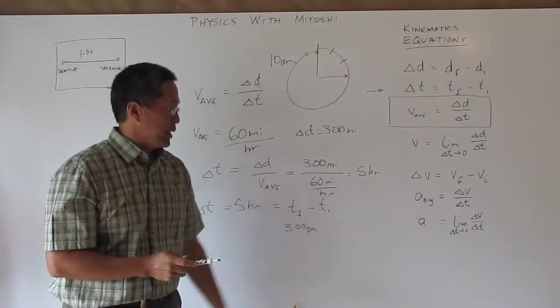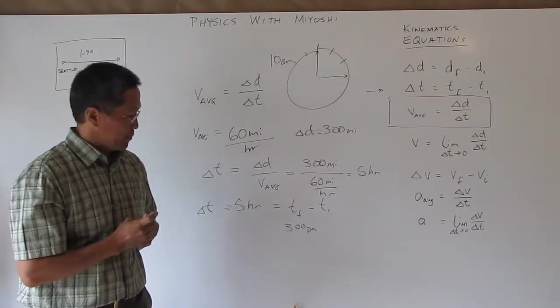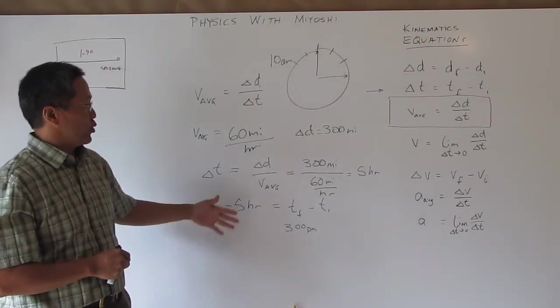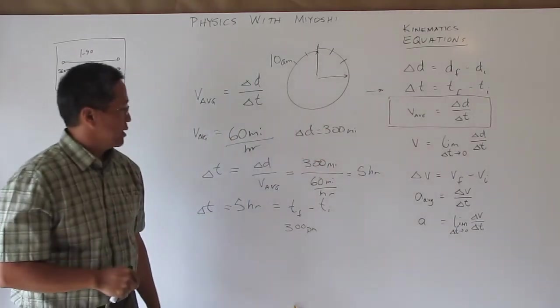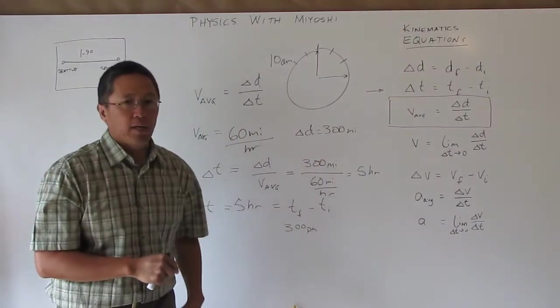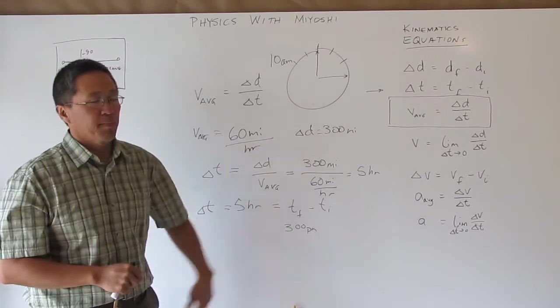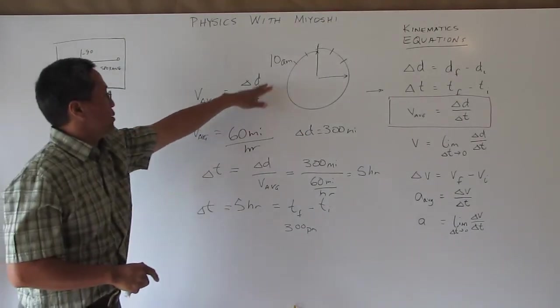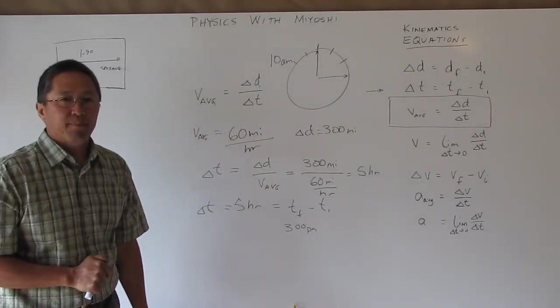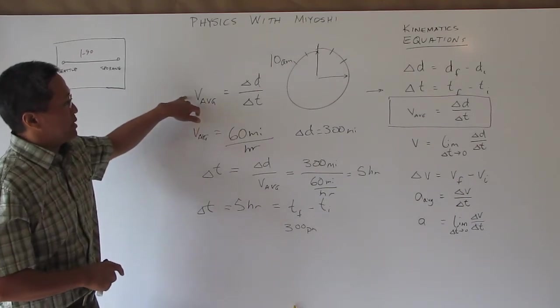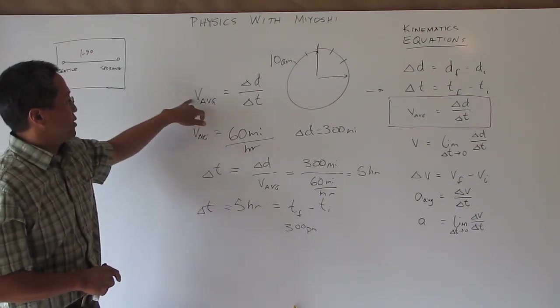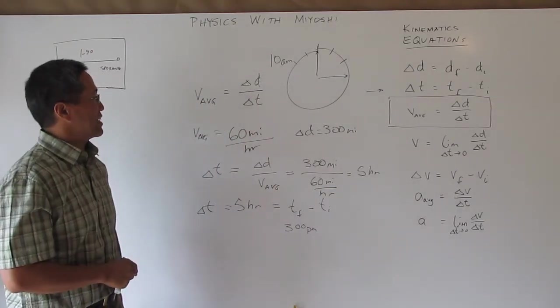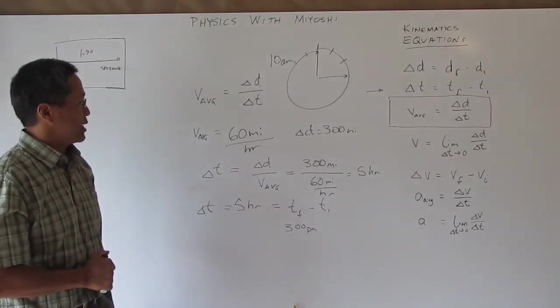So this should be an easy way to use in this case two equations and find that one unknown by doing a little bit of manipulation. Again, one of the most used equations we will use in kinematics in one dimension is our average speed is change in distance over change in time or change in displacement over change in time.